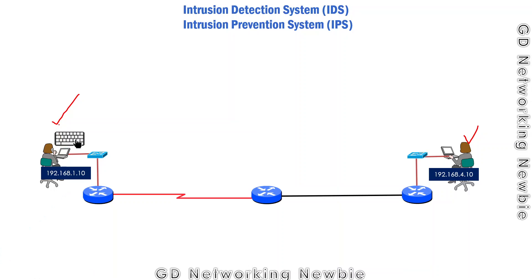Suppose that a user from the left hand side network wants to send something to the network on the right hand side. That user generates data, encapsulates it with the required header, and then this packet in the form of a frame travels from one hop to another hop. When the data arrives at this router, we want to monitor all the traffic flowing through this router because we have some security threats and we want to protect our network on the right hand side.